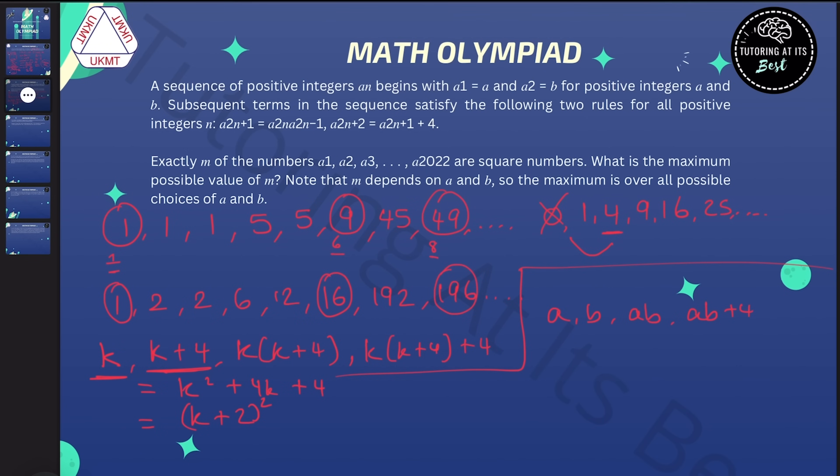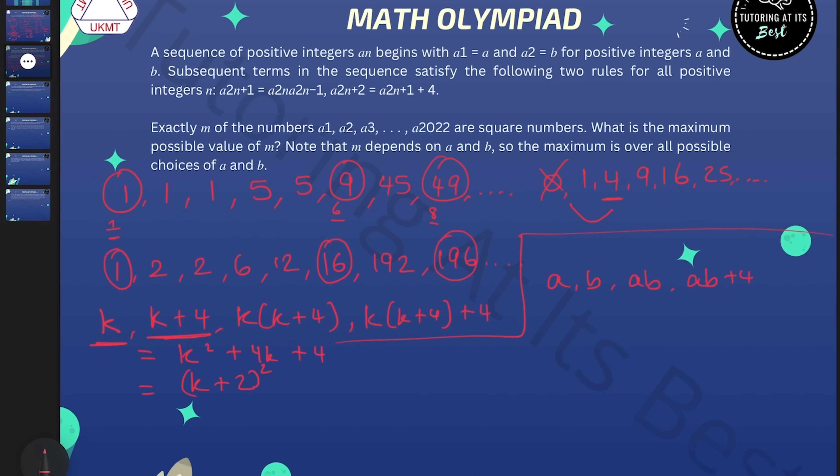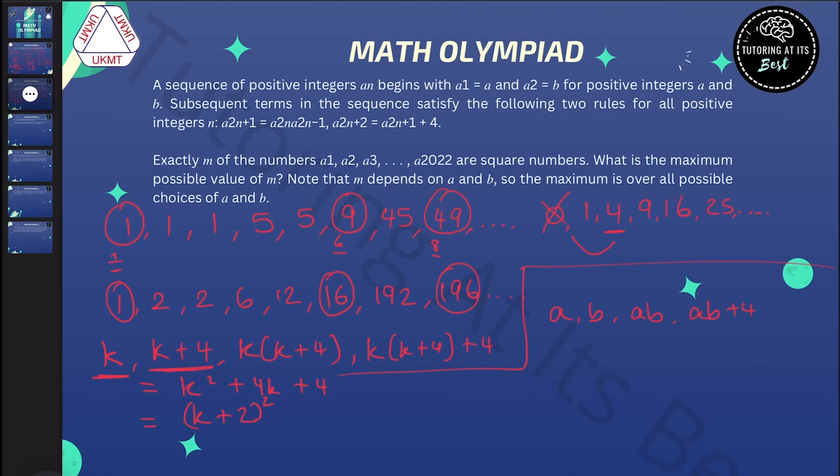So we can see at once that there can be at most three squares in the first four terms. If a was a square and b was a square, and one of a times b and a times b plus 4 was a square, we'd have three, and that would be the most that we could get out of these four terms.